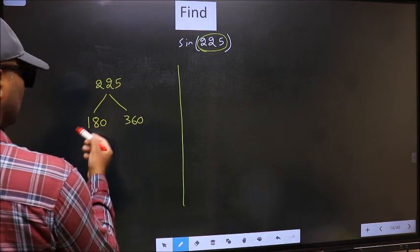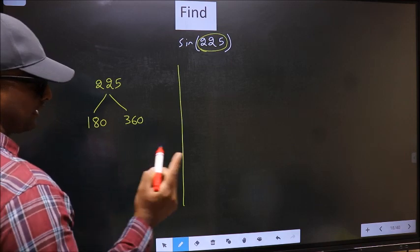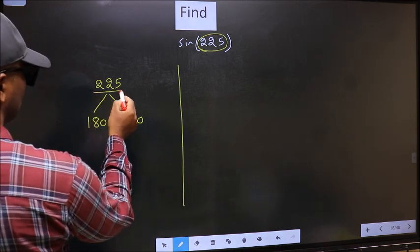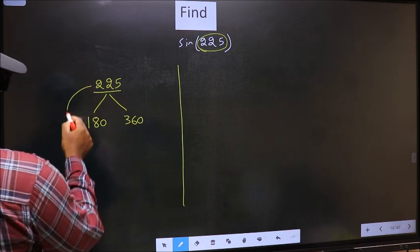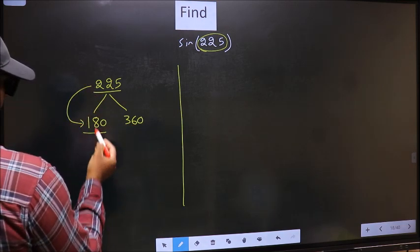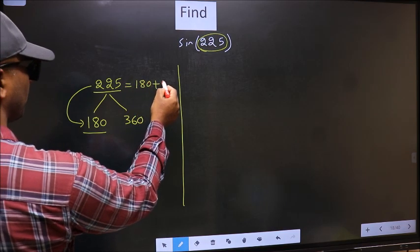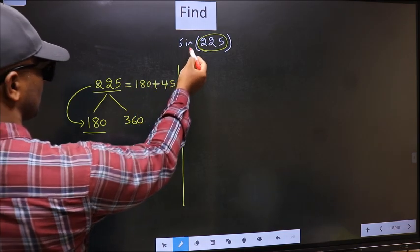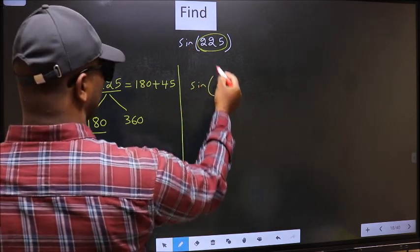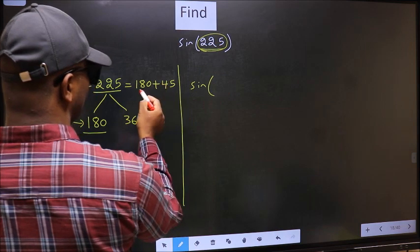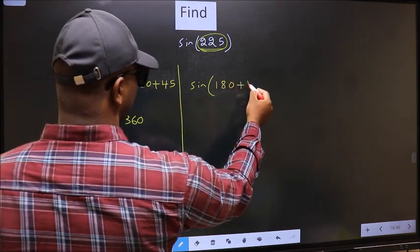This is 180 times 1, and this is 180 times 2. Now, 225 is close to which number? It's close to 180. So 225 should be written as 180 plus 45. This will become sin, and in place of 225 we should write 180 plus 45.